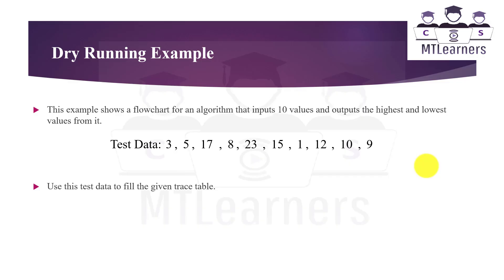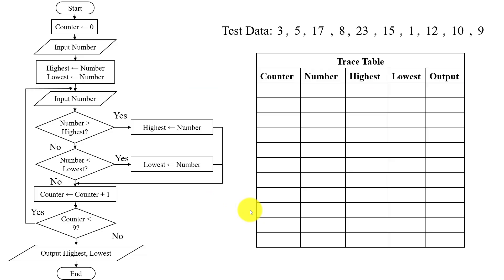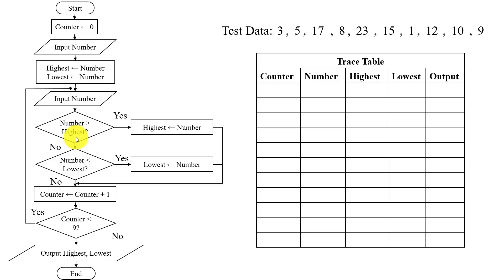This example shows a flowchart for an algorithm that inputs 10 values from the user and outputs the highest and lowest values. This is the test data for the given example, and we will use this test data to fill the given trace table. The trace table has five columns: counter, number, highest, lowest, and output. We will fill these columns one by one using this test data and this flowchart.